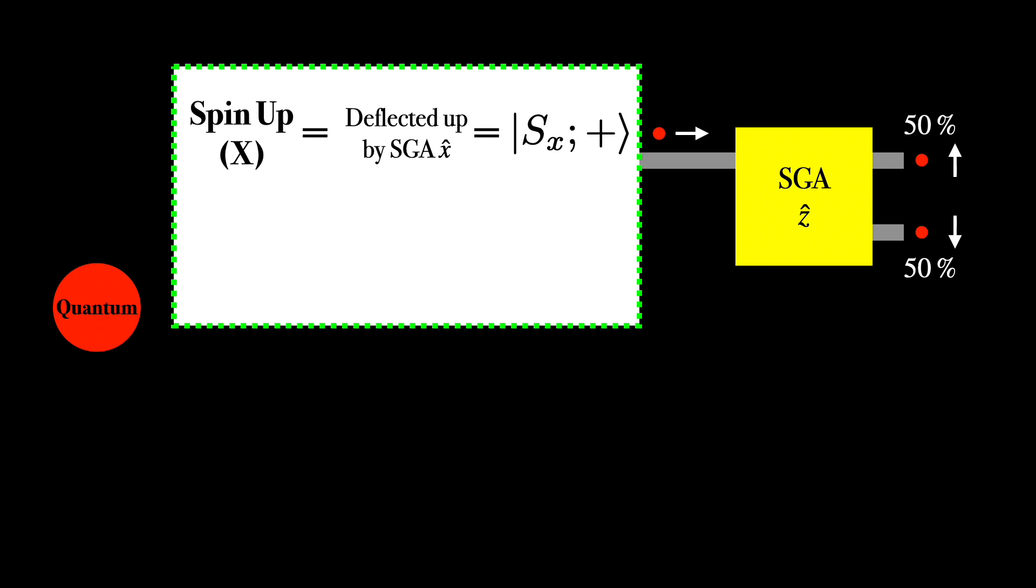Now here is where the weirdness of quantum mechanics really stands out. This ket actually equals a superposition of kets in the z direction. So the way to read this is that spin up in the x direction equals 1 over the square root of 2 spin z up plus 1 over the square root of 2 spin z down.